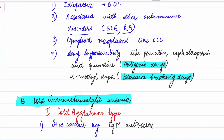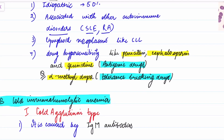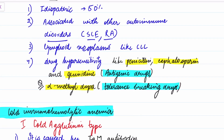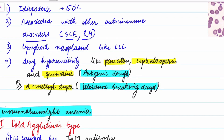Drug hypersensitivity can be of two types: one is antigenic drugs and the other are tolerance-breaking drugs. Tolerance-breaking drugs include alpha-methyldopa, whereas drug hypersensitivity reactions occur with penicillin, cephalosporin, and quinidine. This is a direct question that can come in your exam.